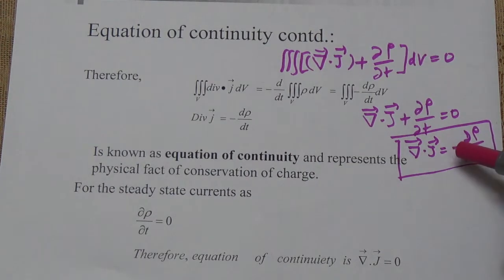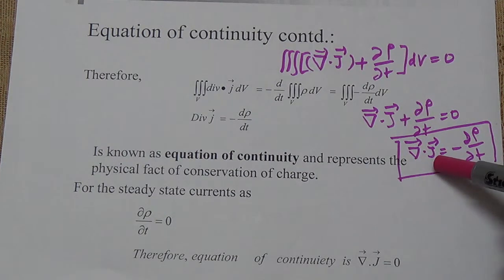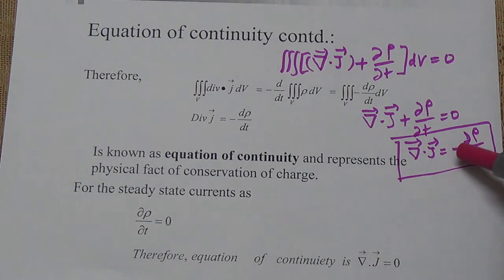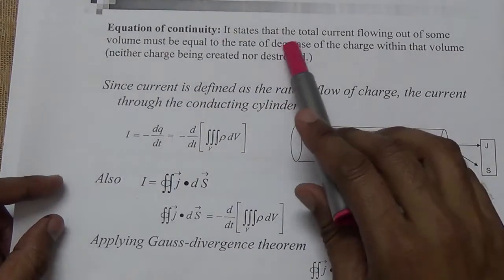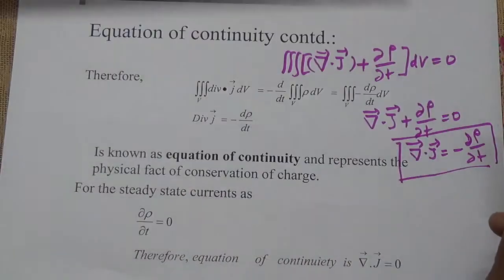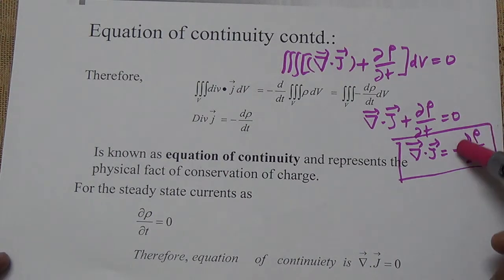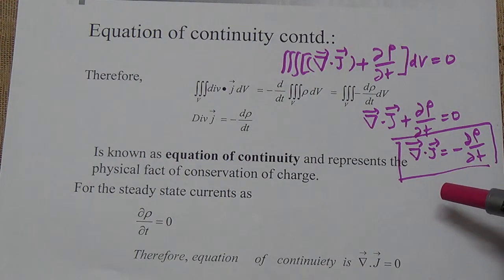The negative sign indicates that the charge is decreasing within the cylinder. D rho upon DT is the rate of change of charge density — that is essentially current. When we take the divergence of the current density, it equals the negative of ∂ρ/∂t, which is the rate of change of the volume charge density. So the total current flowing out of the volume must equal the rate of decrease of the charge within that volume, confirming our first statement.